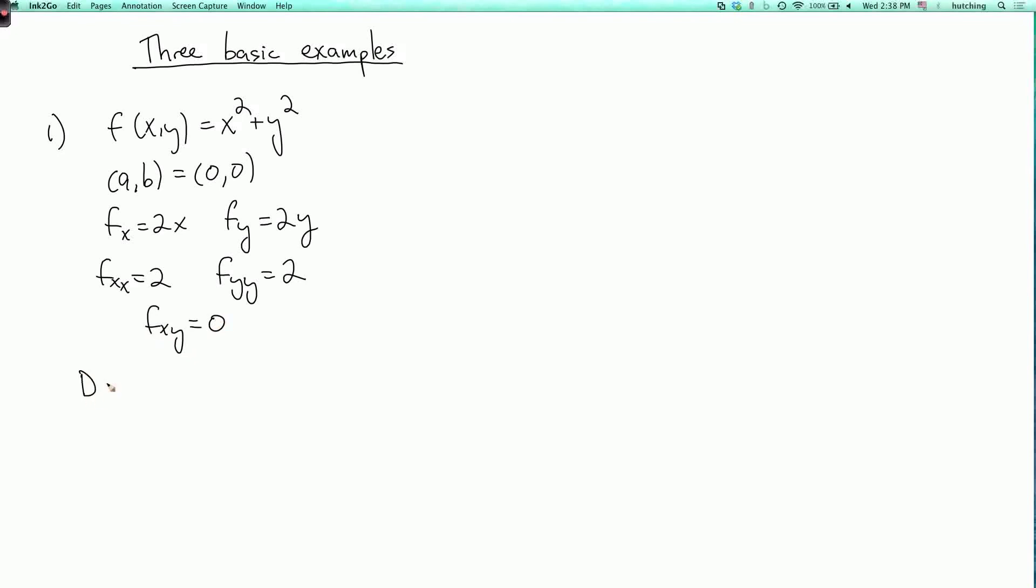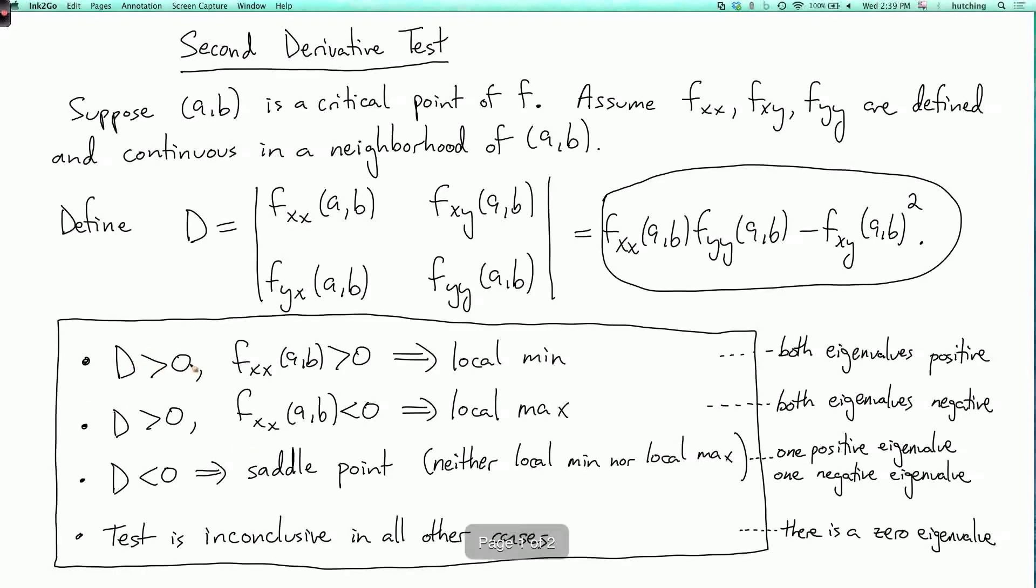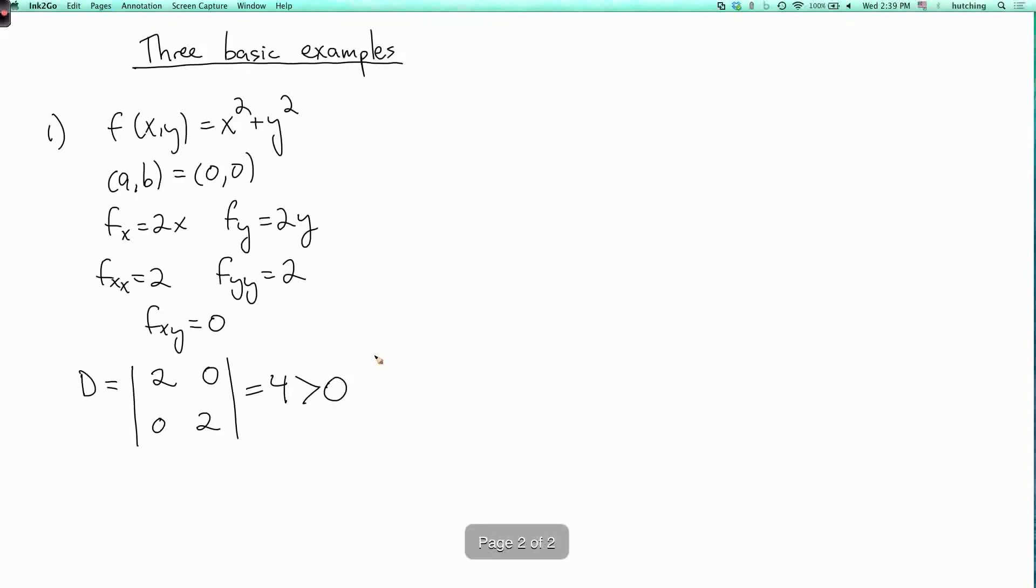So D is the determinant of the matrix. So now we have to evaluate this at (0,0). Well, it actually doesn't matter because these are constants, but anyway, the matrix is 2, 0, 0, 2. So this determinant is 2 times 2 minus 0 times 0, which is 4, which is positive. And also fxx and fyy are both positive. So looking back at the test, we see that when D is positive and fxx is positive, that's a local minimum, which of course it is.